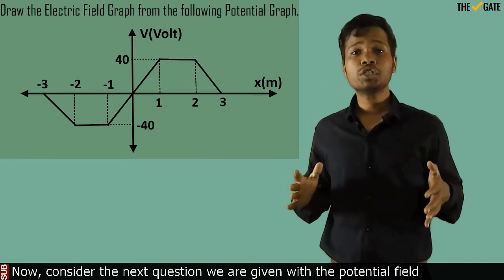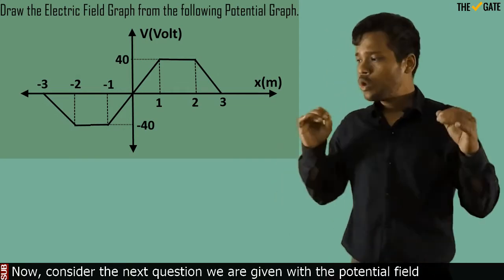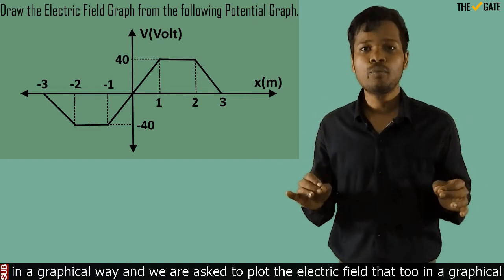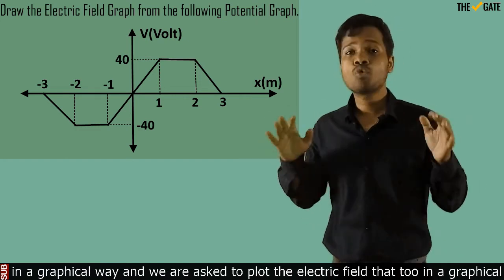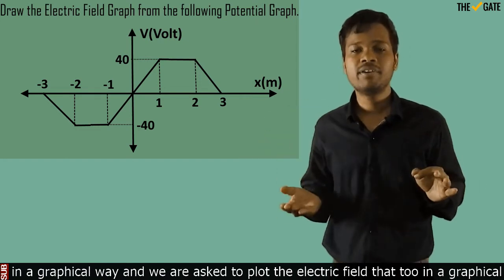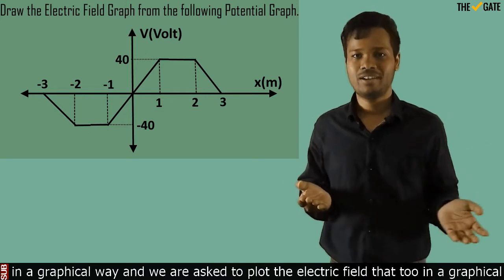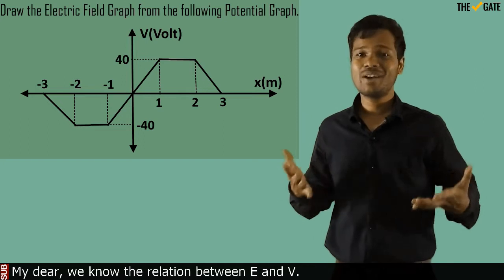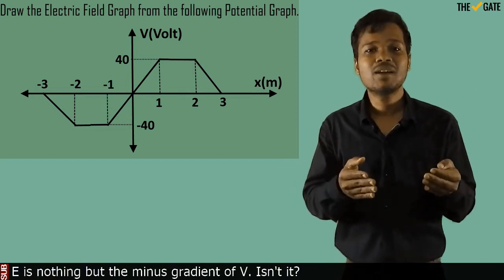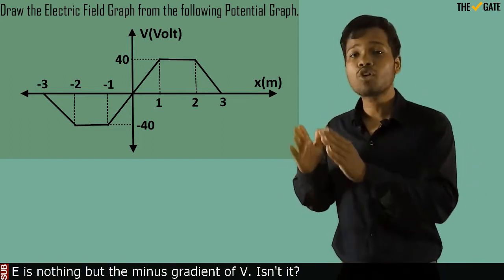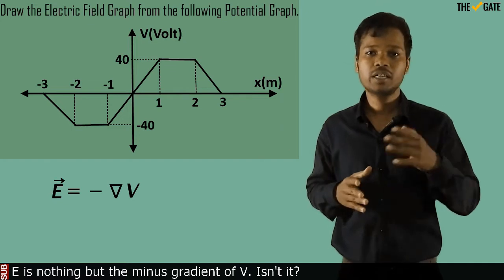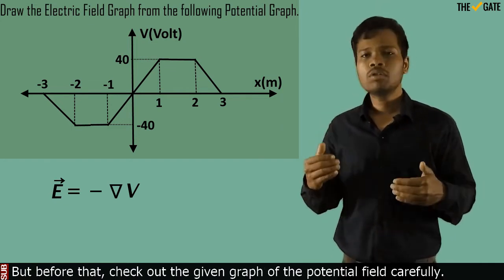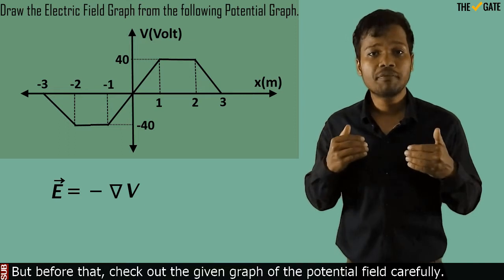Consider the next question. We are given with the potential field in a graphical way and we are asked to plot the electric field, that too in a graphical way. We know the relation between E and V: E is nothing but the minus gradient of V. But before that, check out the given graph of the potential field carefully.